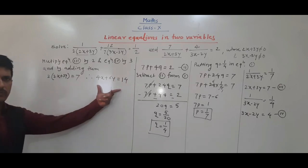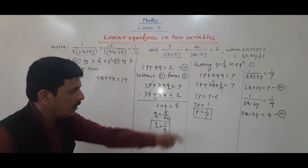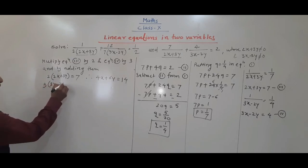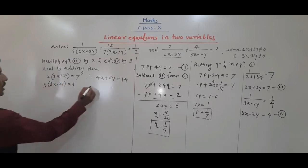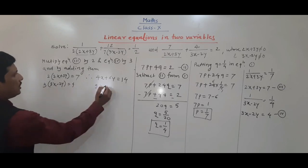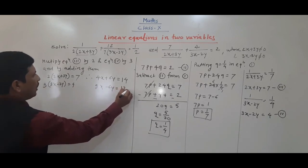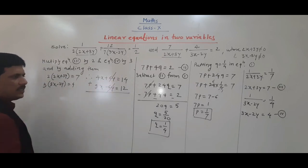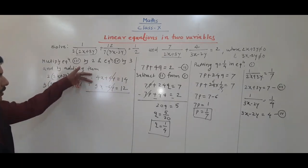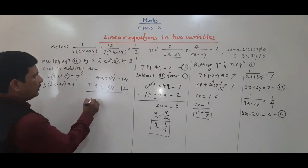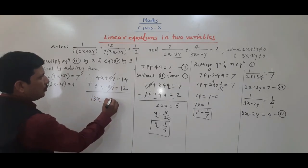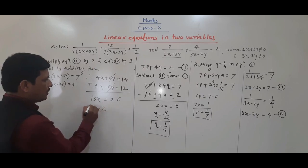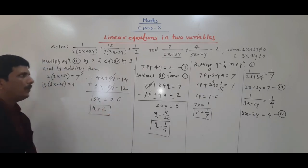By adding them, +6y and -6y get cancelled. So 4x + 9x = 13x, and 14 + 12 = 26. So 13x = 26, therefore x = 2. The value of x is 2.